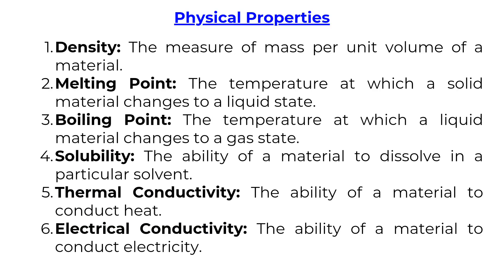Physical properties include: Density — the measure of mass per unit volume of a material. Melting point — the temperature at which a solid changes to a liquid state. Boiling point — the temperature at which a liquid changes to a gas state. Solubility — the ability of a material to dissolve in a particular solvent. Thermal conductivity and electrical conductivity — the ability of a material to conduct heat and electricity respectively.